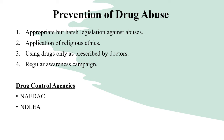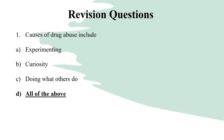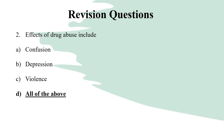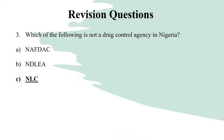Revision questions. Question one: causes of drug abuse include — A) experimenting, B) curiosity, C) doing what others do, D) all of the above. The answer is D, all of the above. Question two: effects of drug abuse include — A) confusion, B) depression, C) violence, D) all of the above. The answer is all of the above. Question three: which of the following is NOT a drug control agency in Nigeria? 1) NAFDAC, 2) NDLEA, 3) NLC. The answer is NLC.